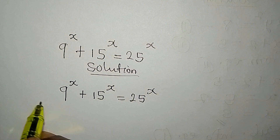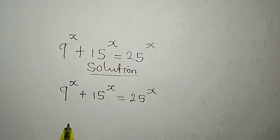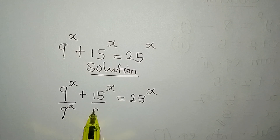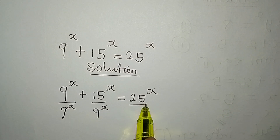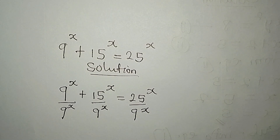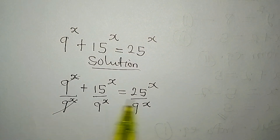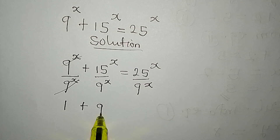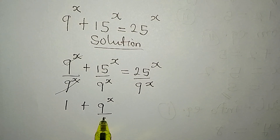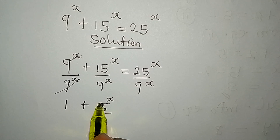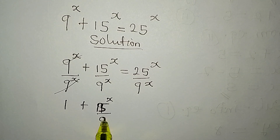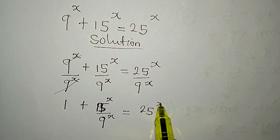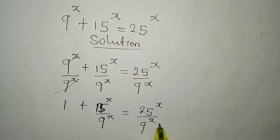Let's divide all through by 9 to the power of x. So I'll divide this by 9 to the power of x, divide this by 9 to the power of x, then divide this by 9 to the power of x, so that this will cancel this. Now we'll be having 1 plus 15 to the power of x over 9 to the power of x, equal to 25 to the power of x over 9 to the power of x.